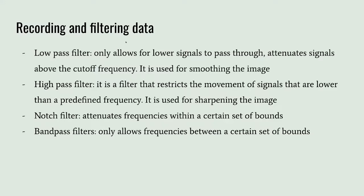The high-pass filter works in the opposite way — it allows higher signals to pass through and attenuates signals below the cutoff frequency. This is used for sharpening the image, making peaks or sharp points more visible. The notch filter attenuates frequencies within a certain set of bounds, removing what's in the middle, while the bandpass filter does the opposite by only allowing frequencies between a certain set of bounds.